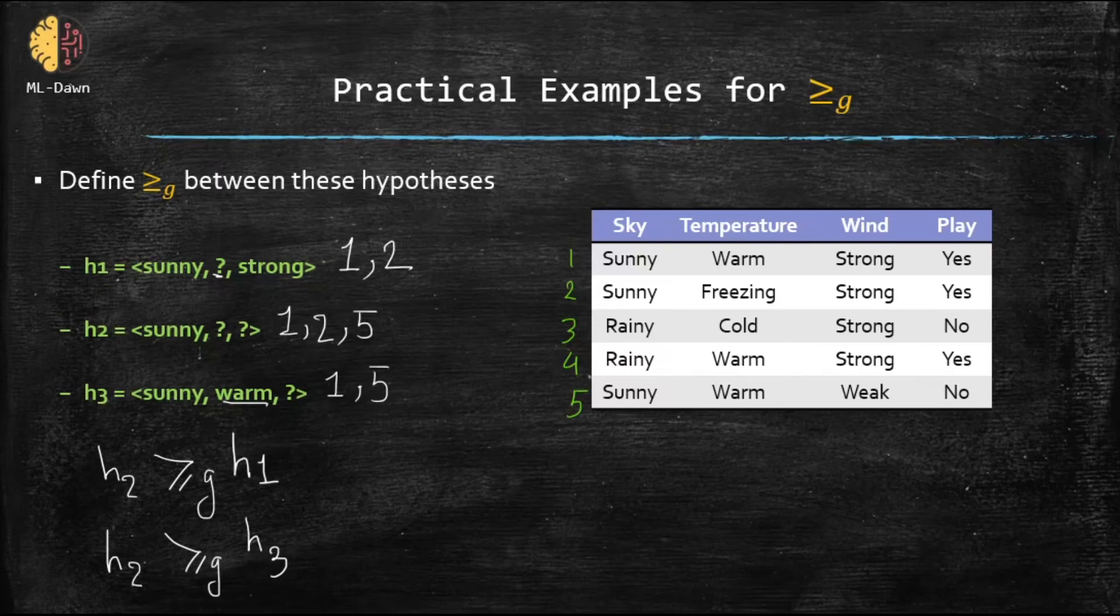However, the tricky part, can we say that h1 or h3, can we say any of them is more general than or equal to the other? Notice, they have some sort of intersection between the examples that would satisfy each one of them. Example one satisfies both of them. But example number two can satisfy h1 but cannot satisfy h3. Same way, example number five can satisfy h3 but cannot satisfy h1. Because of that, you cannot consider this relationship between h1 and h3. The only example that can satisfy both of them is example number one. You want sunny for sky and the other attributes have to have warm for temperature and have to have strong for wind. I hope that this has cleared this much better.